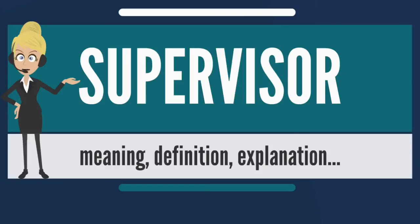A supervisor is first and foremost an overseer whose main responsibility is to ensure that a group of subordinates get out the assigned amount of production, when they are supposed to do it and within acceptable levels of quality, costs, and safety. A supervisor is responsible for the productivity and actions of a small group of employees.